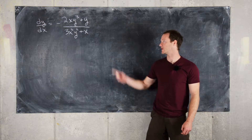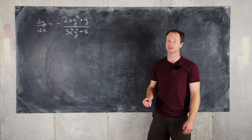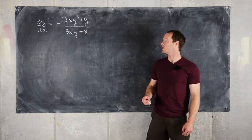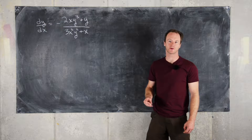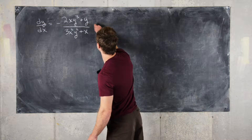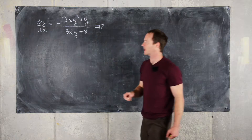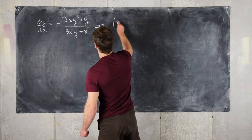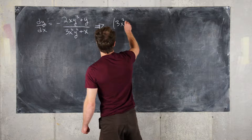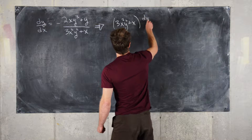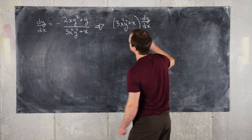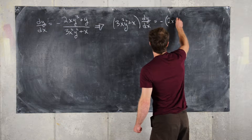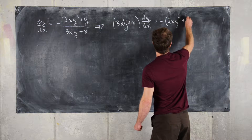Here we're going to look at the differential equation given here. So dy/dx equals negative 2xy³ plus y over 3x²y² plus x. The first thing we want to do is cross multiply, which gives us 3x²y² plus x times dy/dx equals negative 2xy³ plus y.